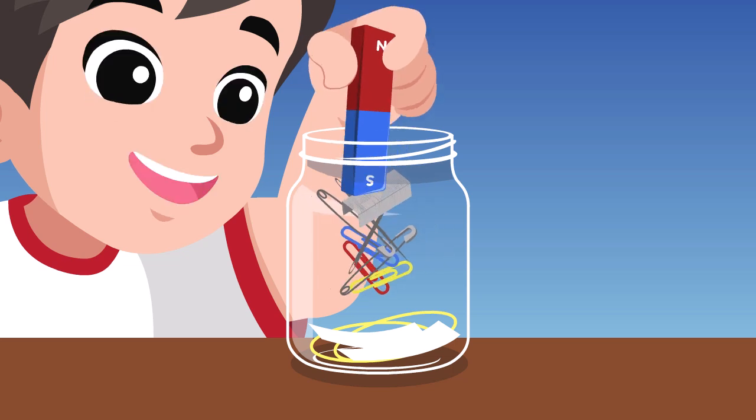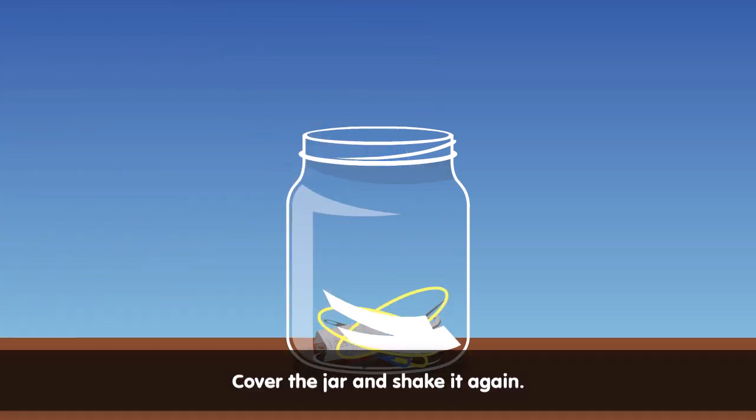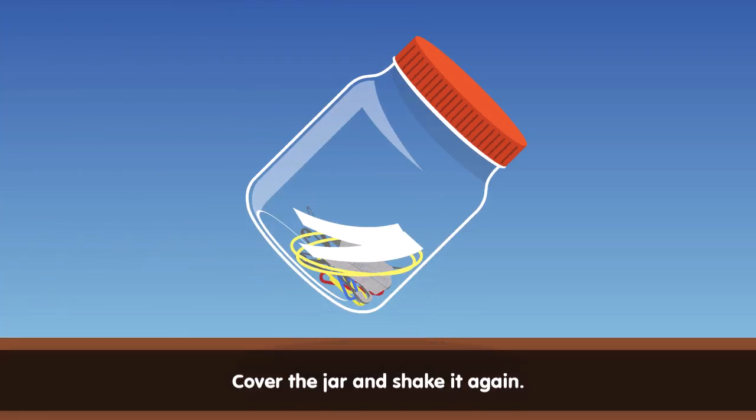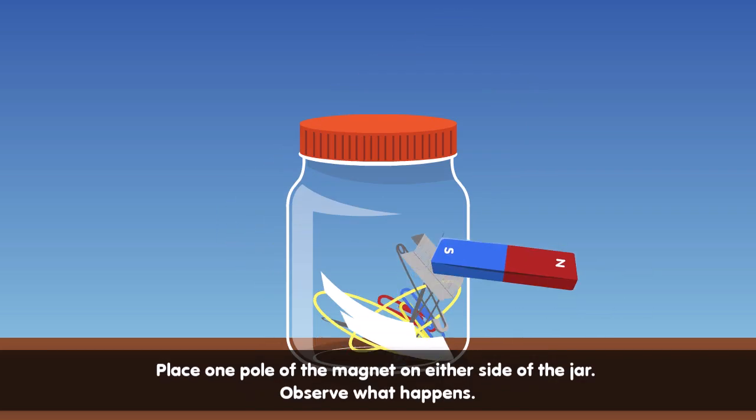This time, try to move the magnet sideways then observe. Now, cover the jar again and shake it. Then place one pole of the magnet on either side of the jar. Observe what happens.